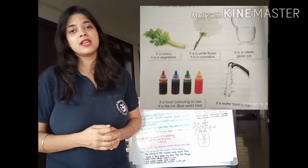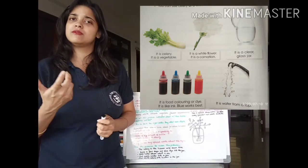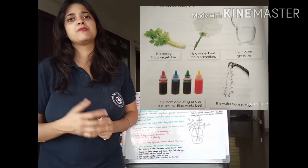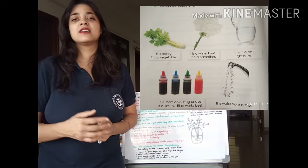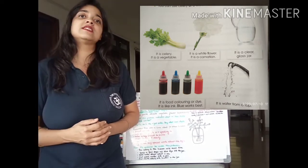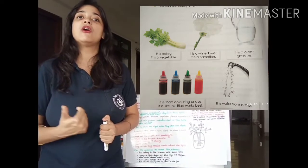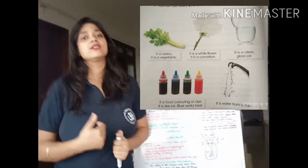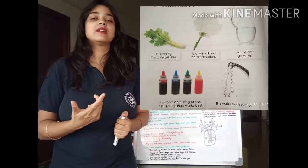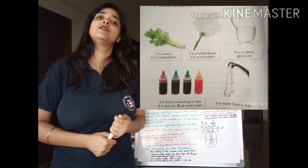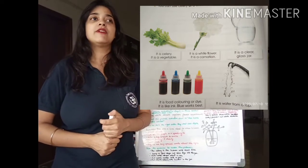What do you mean by celery? As you see here, the picture of spinach or coriander that's given. What is celery? It's a vegetable with long white or green stems which you can eat without getting it cooked. It's edible without being cooked.